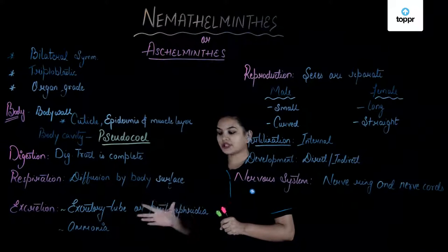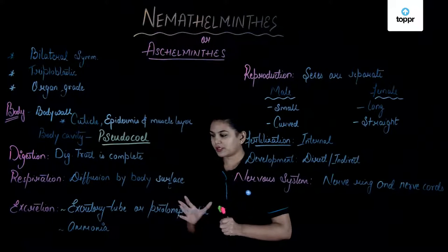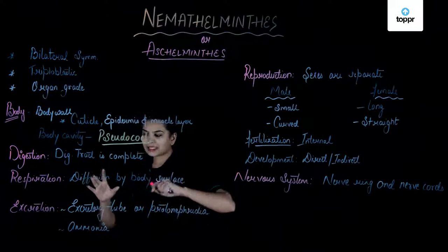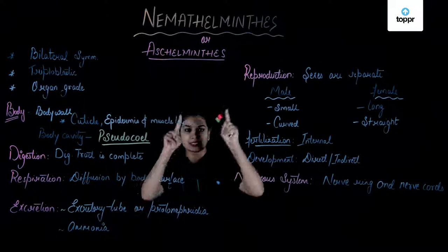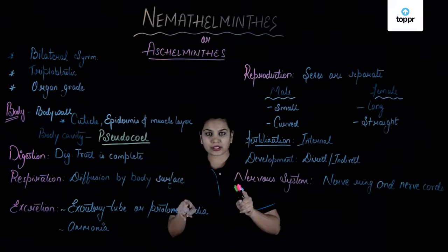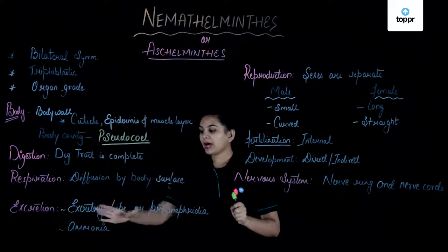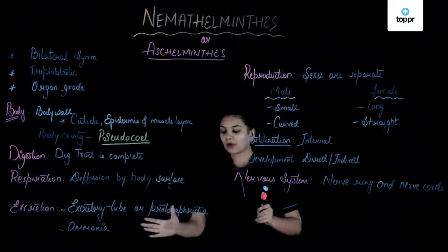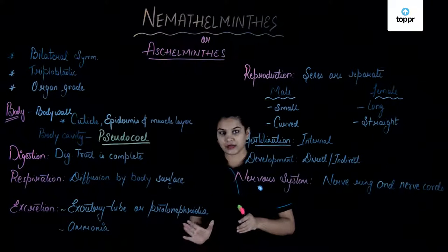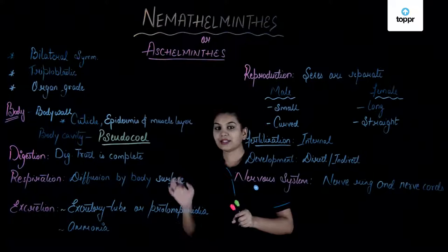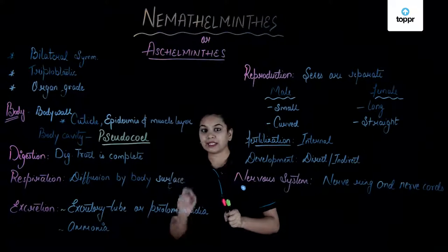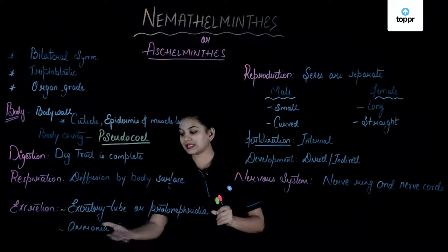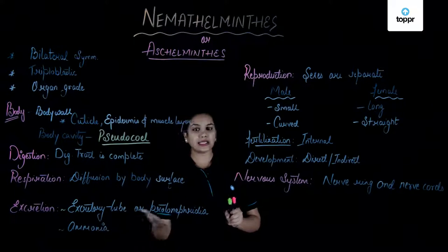Coming to excretion — also important — the excretory system has an H-like structure formed by excretory tubes or protonephridia. The excretory substance in such organisms is ammonia.